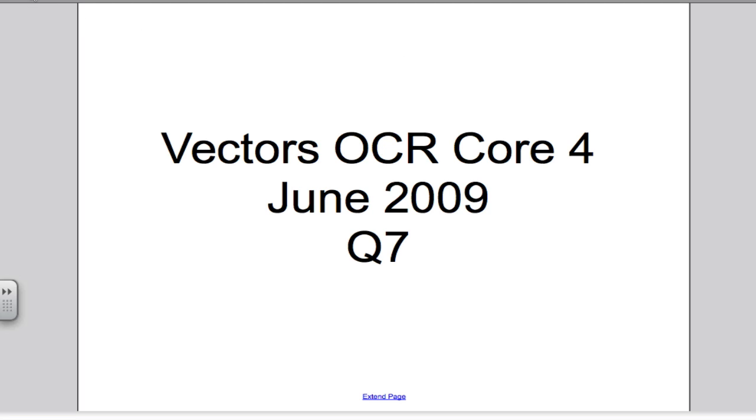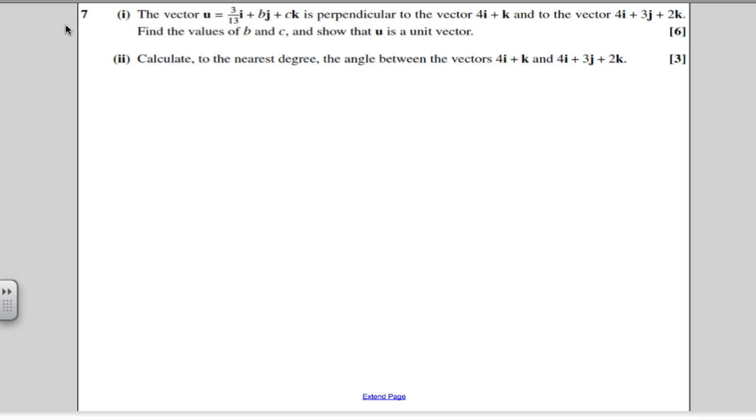Let's take a look at the question. It's a 9 mark question. It tells you that there's a certain vector that is perpendicular to another vector and to another vector. Find the values of B and C and show that U is a unit vector.